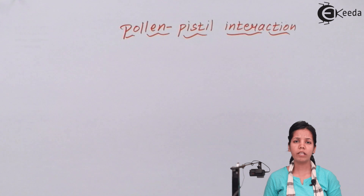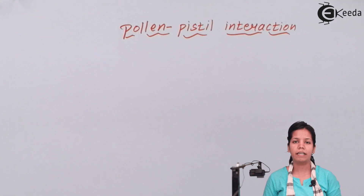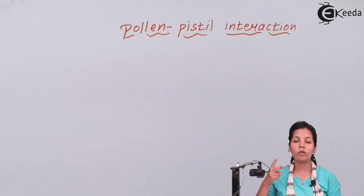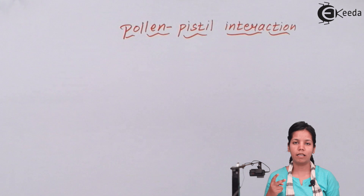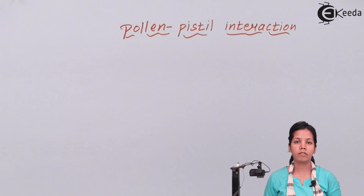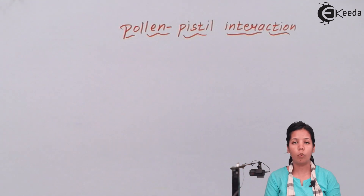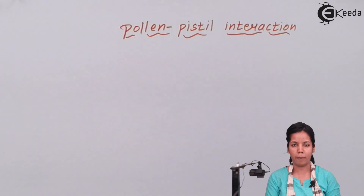During the process of double fertilization, pollen-pistil interaction plays a vital role. We know that during double fertilization there are two male gametes. Due to pollen-pistil interaction, one male gamete fuses with the egg cell, while the other male gamete forms the endosperm, providing nutrition to the growing gametophyte.